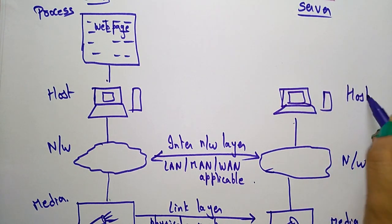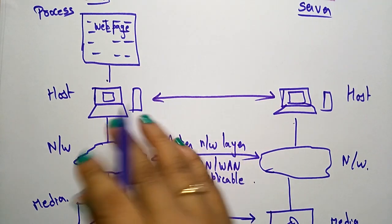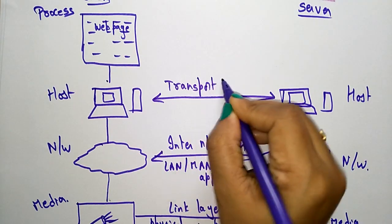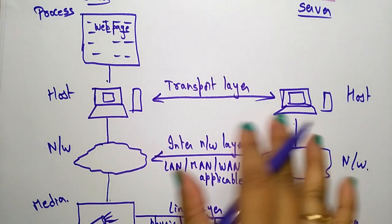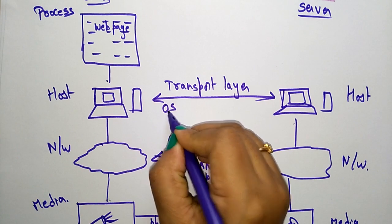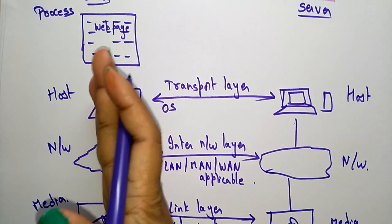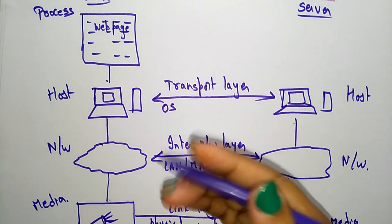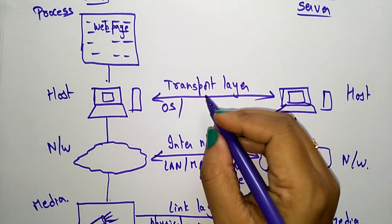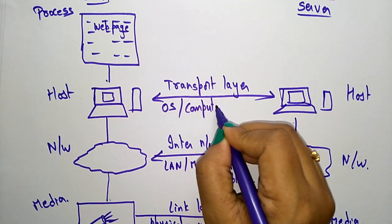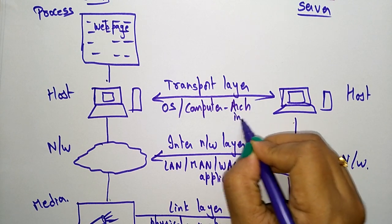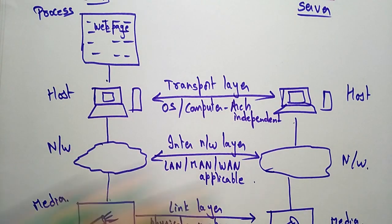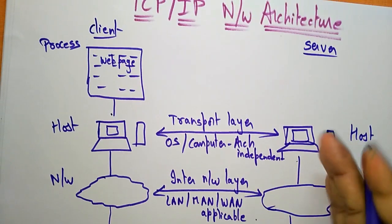Communication between the client and server hosts is called the transport layer. The transport layer is OS independent — the client system may use Windows while the server system uses Linux. It is also computer architecture independent. Whatever systems you are using, the operating systems and computer architectures are independent of each other.